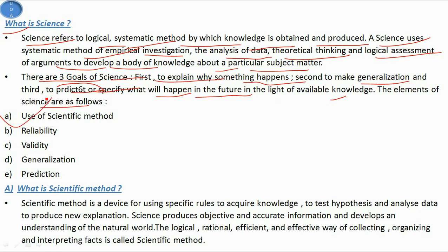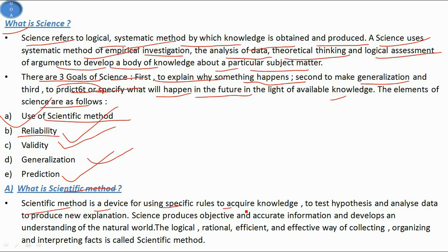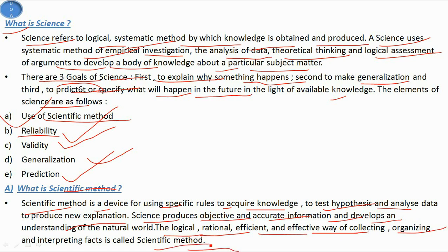The elements of science are as follows: the first element is use of scientific method, then reliability, validity, generalizations, and predictions. Scientific method is a device for using specific rules to acquire knowledge, to test hypotheses, and to analyze data to produce new explanations. Science produces objective and accurate information and develops an understanding of the natural world. The logical, rational, efficient, and effective way of collecting, organizing, and interpreting facts is called scientific method.